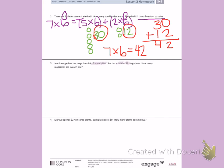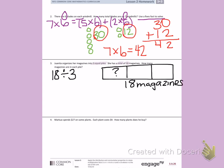When I don't know the size, I have to solve a division problem: eighteen divided by three. I can demonstrate this with a tape diagram. I have three piles and a total of eighteen magazines. I don't know how many magazines are in each pile.